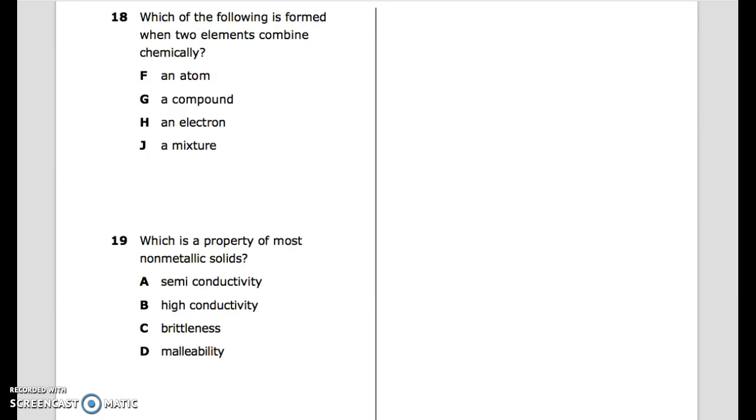Question 19: Which is a property of most non-metallic solids? A. Semi-conductivity. B. High conductivity. C. Brittleness. D. Malleability.